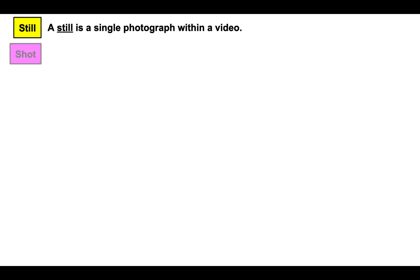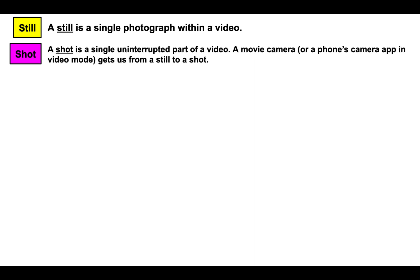A still is a single photograph within a video. A shot is a single uninterrupted part of a video. It's when you take your smartphone and hit that big red button on the camera app in video mode on your iPhone. When you hit that red button a shot begins, and it ends when you hit that red button again. So a shot is what a movie camera makes, or what your phone's camera app in video mode makes.